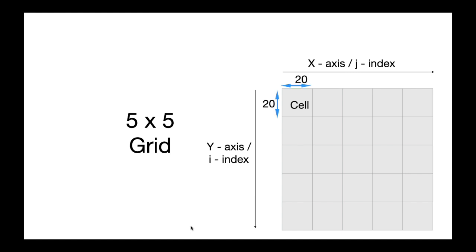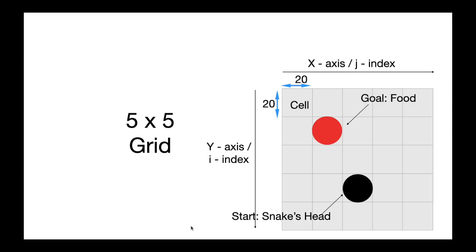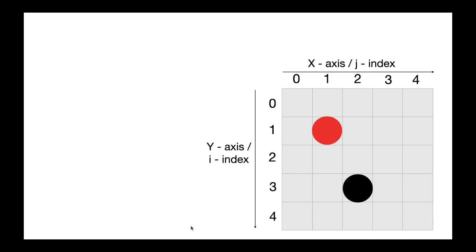Let's say on our grid the snake's head is at index 3,2 and the food is placed at 1,1. We have 4 neighbor cells to our snake. To find the shortest optimal path we need to use the equation which is f equals to g plus h of x.